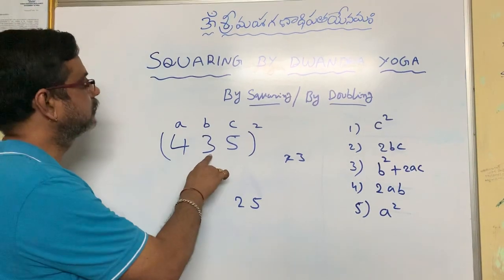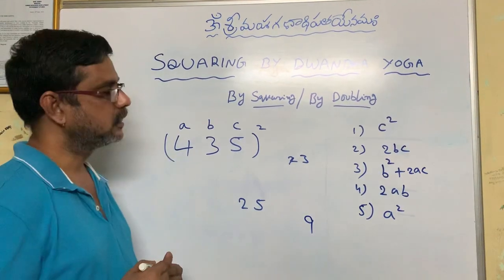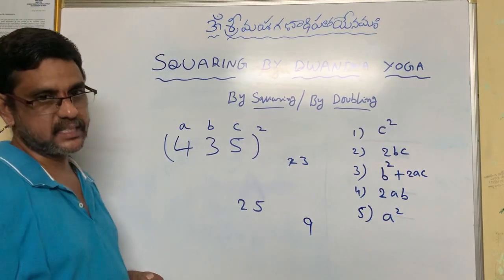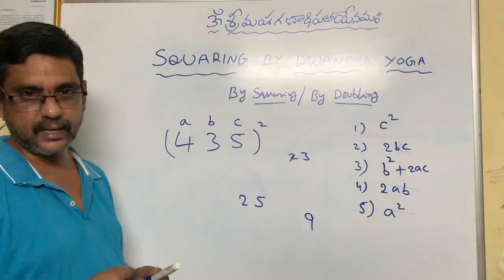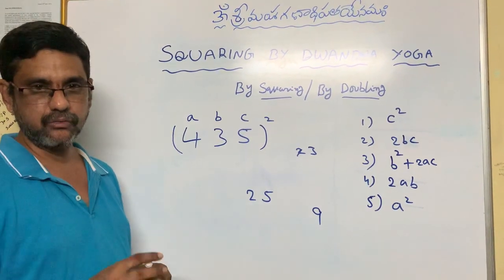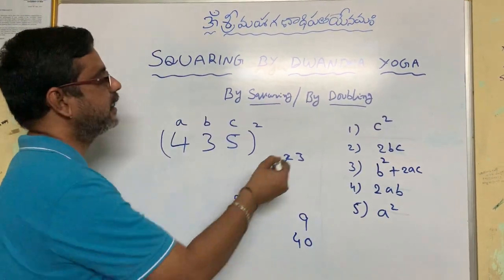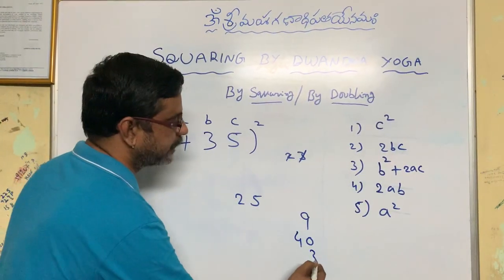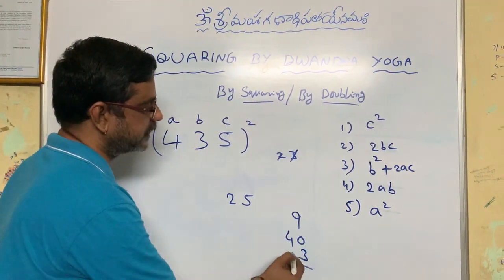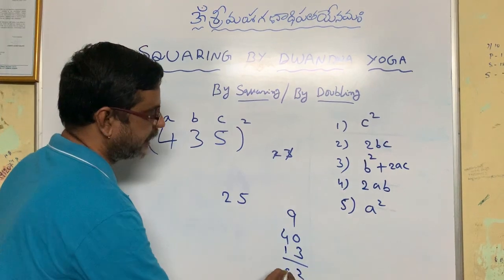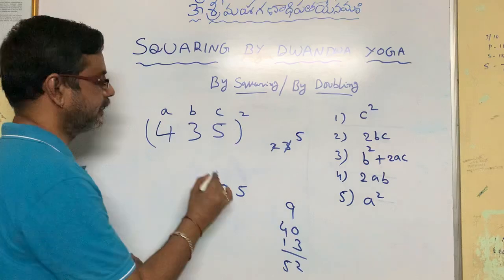Now coming to Step 3, which is a little bit bigger. First we do B square: B is 3, so B square is 9. Next compute 2AC: multiply A and C, 4 into 5 is 20, then double it to get 40. So 2AC is 40. Add the carry-over number 3: total is 9 plus 40 plus 3 equals 52. Write 5 here and 2 here.